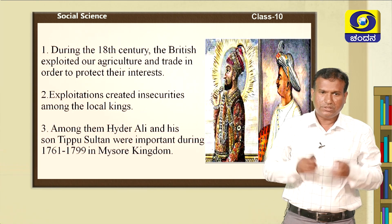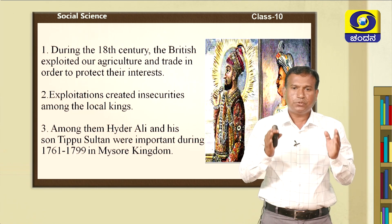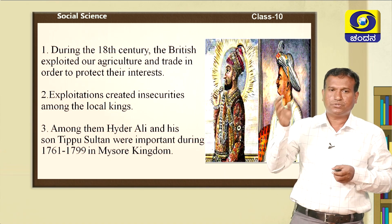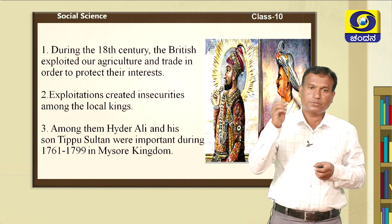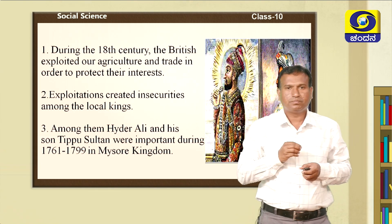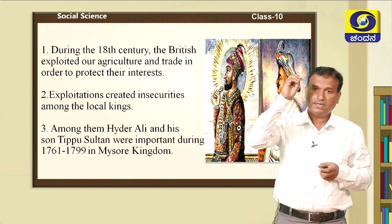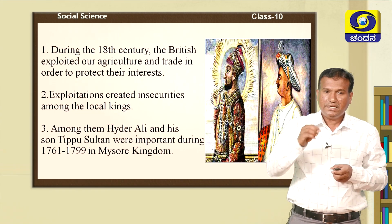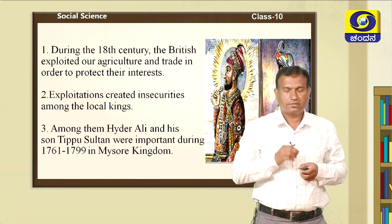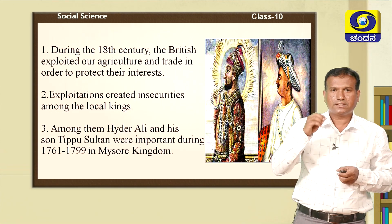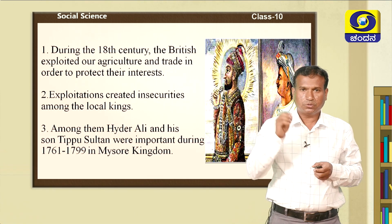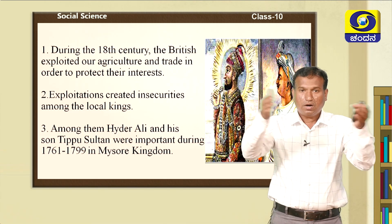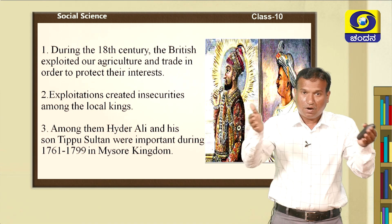Students, we need to understand why we were opposing the British rule in Karnataka. During the later part of the 18th century, the British were trying to exploit our agriculture and trade in order to protect their own interests. These Britishers created insecurity among the local kings — the Zamindars and petty rulers — and that is why they started to revolt against the Britishers, though without organizing themselves.